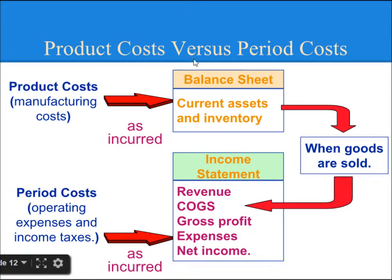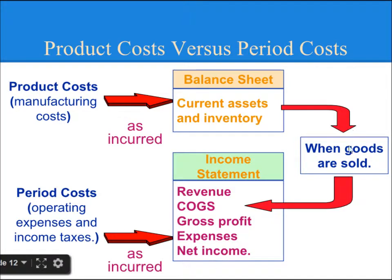Let's see the difference between Product Cost and Period Cost. Product Cost is Manufacturing Cost, whereas Period Cost is Operating Expense and Income Taxes. Product Cost is recorded on the Balance Sheet as a Current Asset and Inventory, and when the goods are sold it becomes Cost of Goods Sold. Whereas Period Costs are expensed on the Income Statement.